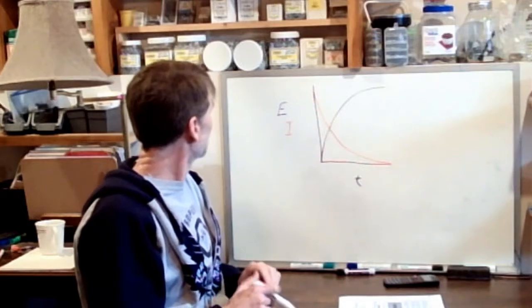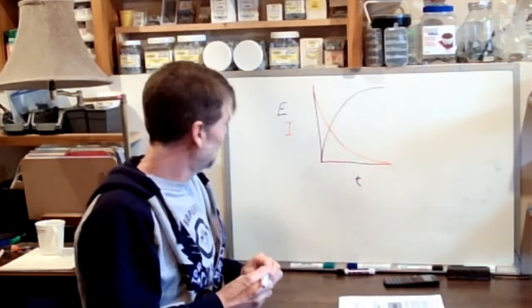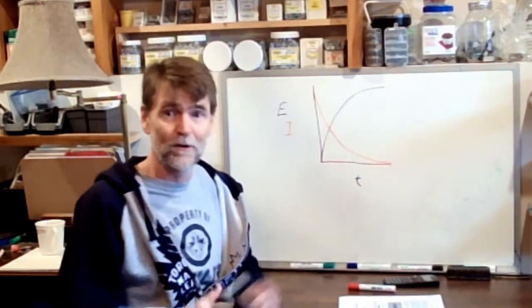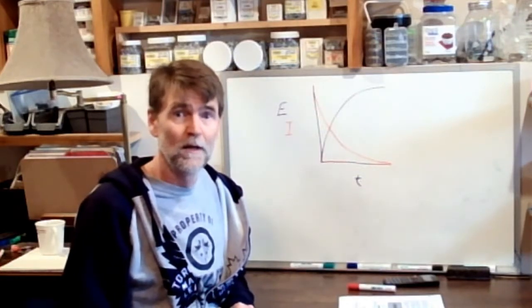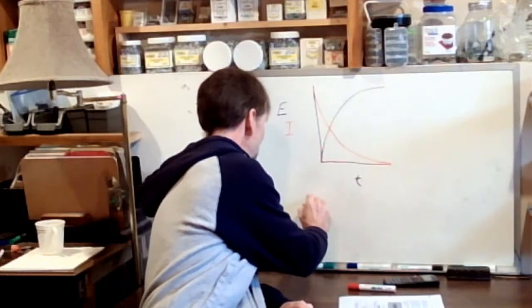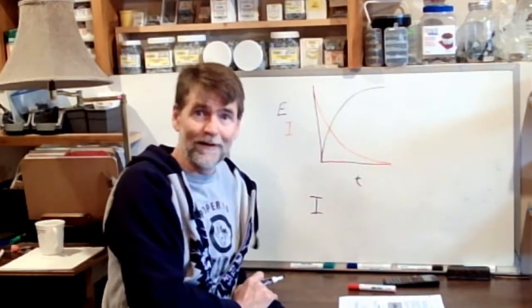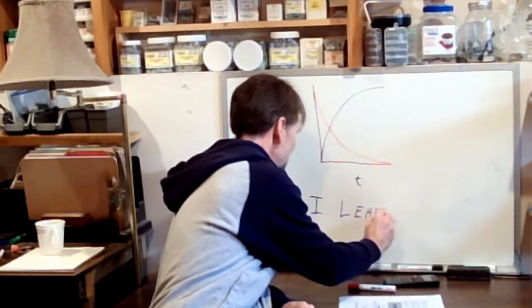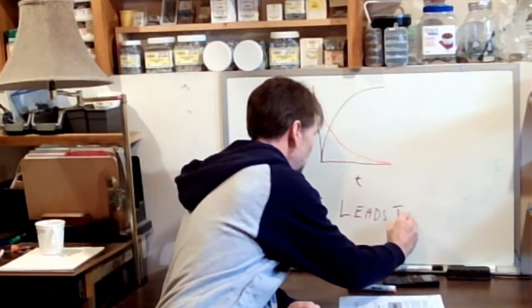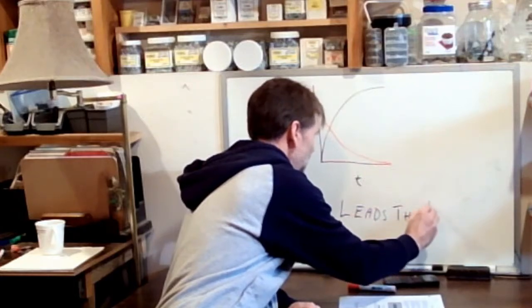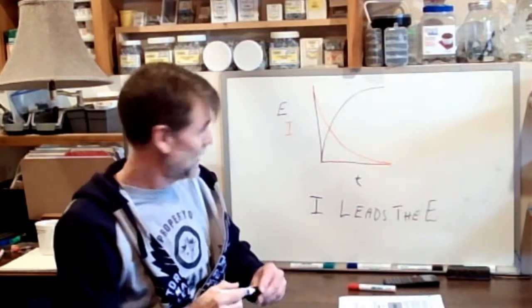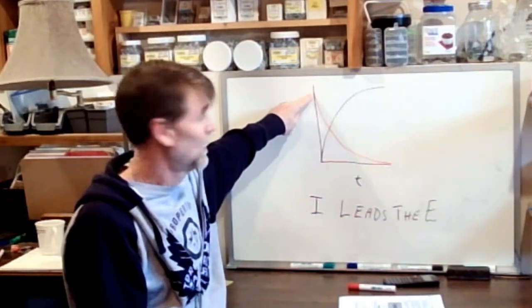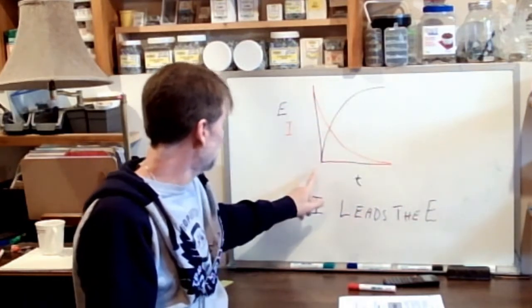Here's where this all goes. I'm just going to throw the statement out there and then we'll try to wrap our heads around it. We could say that the current leads the voltage, because initially we have current flow, and then the current flow drops off as the voltage builds.